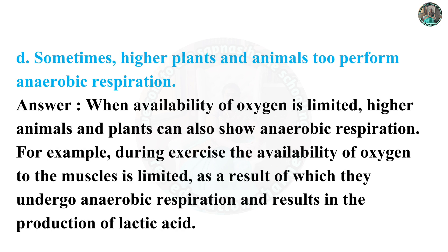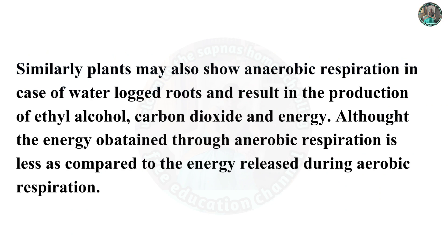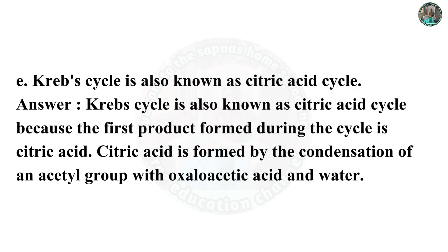D. Sometimes higher plants and animals also perform anaerobic respiration. Answer: When availability of oxygen is limited, higher animals and plants can also show anaerobic respiration. For example, during exercise the availability of oxygen to muscle is limited, as a result of which they undergo anaerobic respiration resulting in the production of lactic acid. Similarly, plants may also show anaerobic respiration in case of waterlogged roots, resulting in the production of ethyl alcohol, carbon dioxide and energy. The energy obtained through anaerobic respiration is less compared to aerobic respiration. E. Krebs cycle is also known as the citric acid cycle because the first product formed during the cycle is citric acid, which is formed by the condensation of an acetyl group with oxaloacetic acid and water.